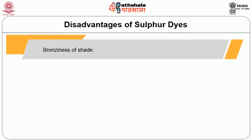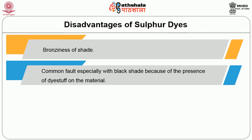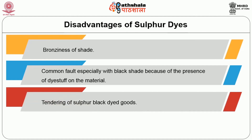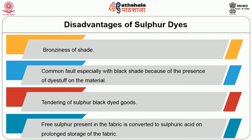Disadvantages of sulphur dyes: bronziness of shade is a common fault, especially with black dyes, due to the presence of dyestuff on the material. Tendering of sulphur black-dyed fabric occurs because free sulphur present in the fabric is converted to sulphuric acid on prolonged storage. So far, we have discussed the properties, application, dyeing procedure and method of dyeing of disperse and sulphur dyes. Both have their own advantages and disadvantages, and selection of the dye is based on the end use of the textile material.